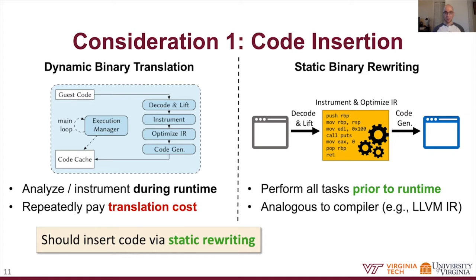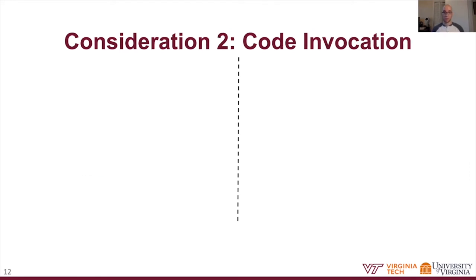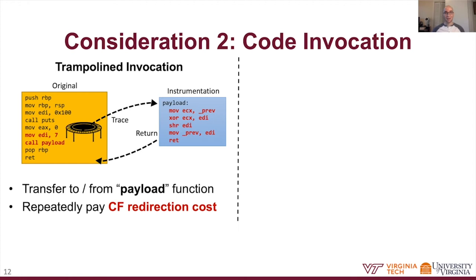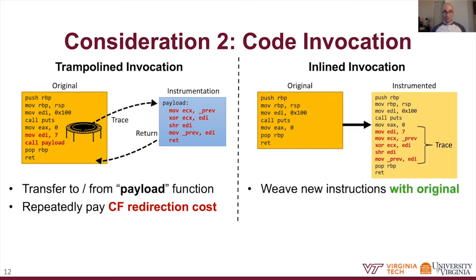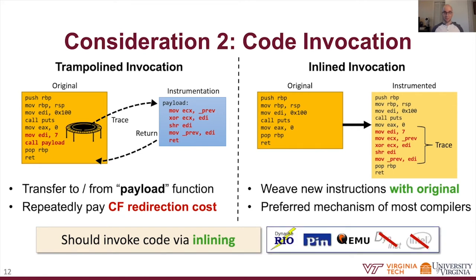Unfortunately, there are few static rewriting options for binary-only fuzzing, as most off-the-shelf tools prefer dynamic translation or hardware-supported tracing, neither of which are compatible with compiler-quality performance and transformation. As a second consideration, we look at how inserted code will be invoked at runtime. The first approach, trampolining, redirects control flow to a payload function via a call and back via a return. The repeated redirection adds significant overhead and is thus undesirable. The alternative is to inline the instrumentation's instructions within the original instructions, which is the preferred mechanism of most compilers today—allowing very tight and optimized instrumentation insertion. In binary-only fuzzing, only dynamic translators consistently support inlining.